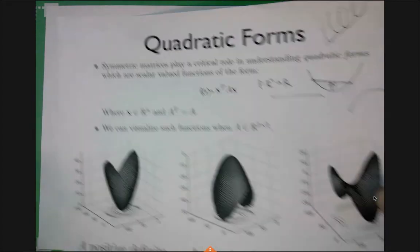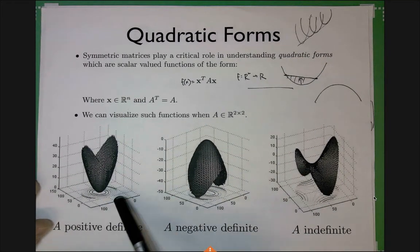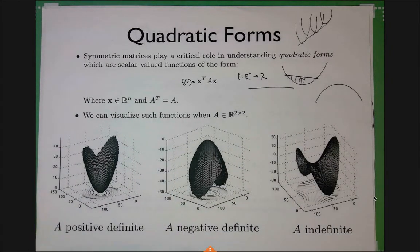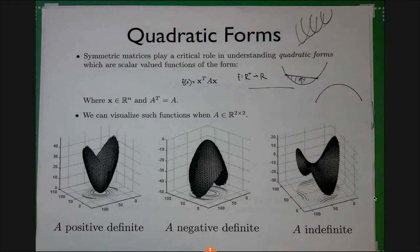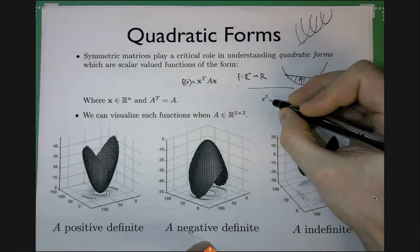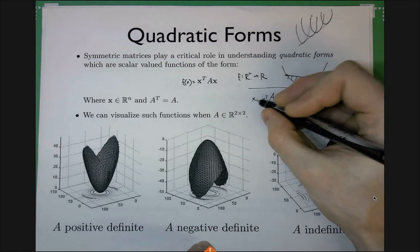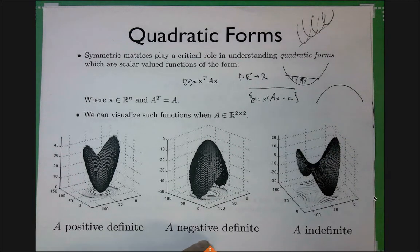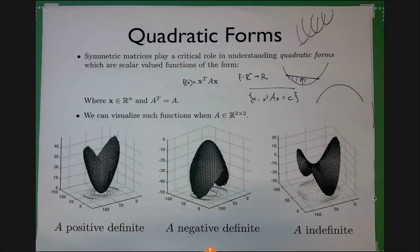Another thing to mention is level curves. We get these level curves if we intersect the surface with a horizontal plane — taking all points X satisfying X^T A X equals C, where C is the height of the horizontal plane. This gives some curve — it can be a closed curve like an ellipse or circle, or an open curve like a hyperbola or parabola.